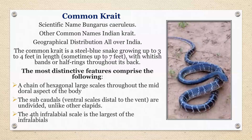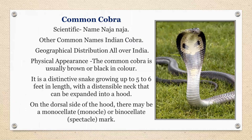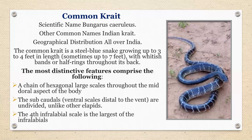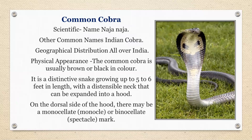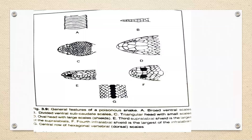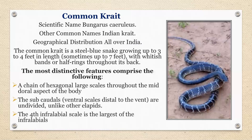Common krait — scientific name Bungarus caeruleus, also known as Indian krait. Geographical distribution: all over India. The common krait is a steely blue snake, up to 3 to 4 feet, with whitish bands running throughout its back. Most distinctive features: a chain of hexagonal large scales throughout the mid-dorsal aspect; subcaudals are undivided; and the 4th infralabial is the largest in krait, while in the common cobra the 3rd supralabial is the largest.